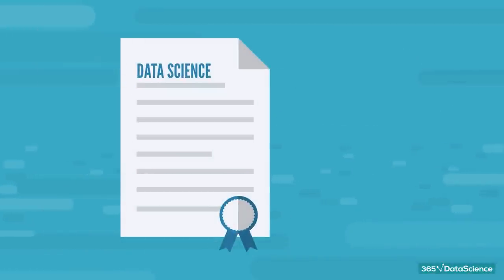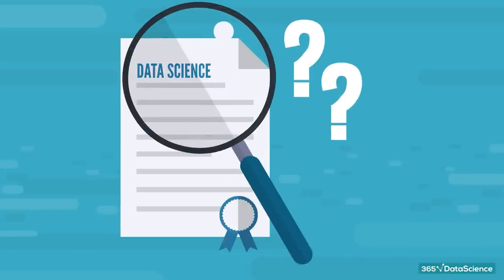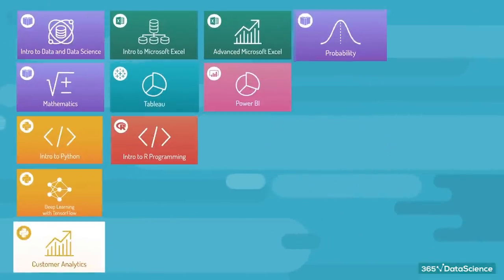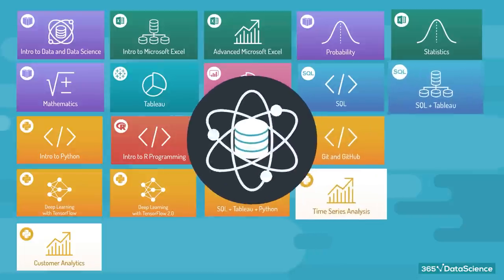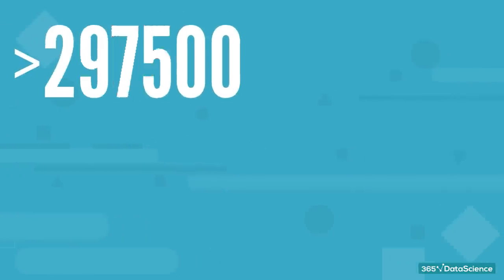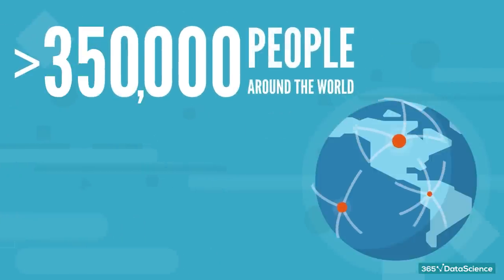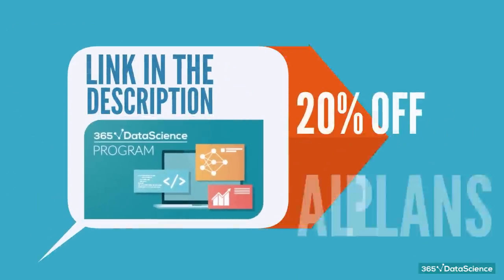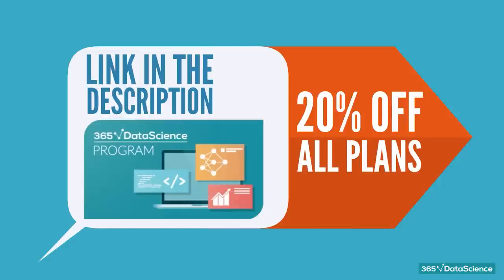However, currently, there is one major con when it comes to a data science degree. Now, that's an issue we've been trying to tackle for several years now. We've created the 365 Data Science Program to help people develop their skills and enter the field of data science, regardless of their background. We have trained more than 350,000 people around the world and are committed to continue doing so. If you are interested to learn more, you can find a link in the description that will also give you 20% off all plans.